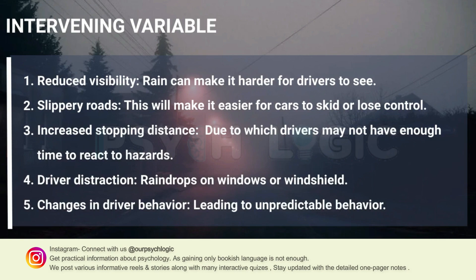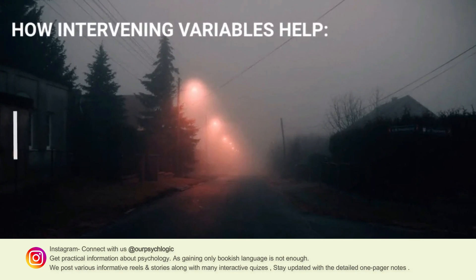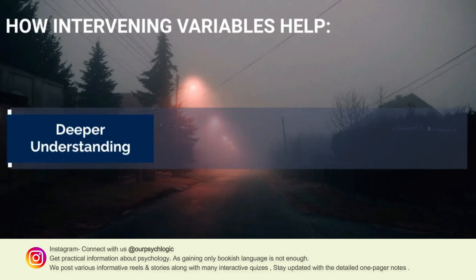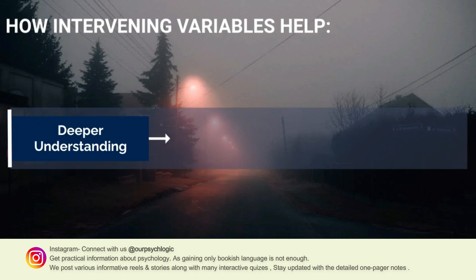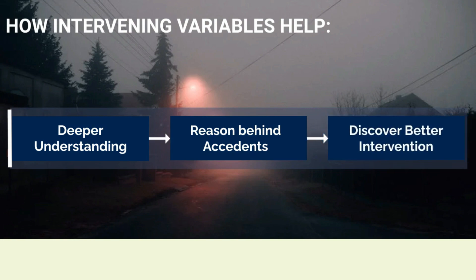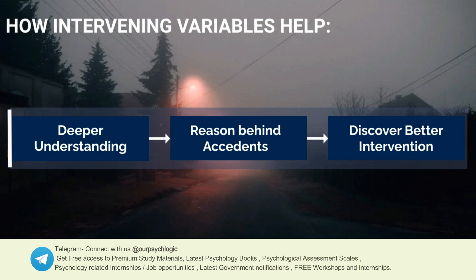Raindrops on windshields and wipers can also distract the driver, making them less attentive to the road. Additionally, there are changes in driver behavior — some drivers might drive more cautiously in the rain while others might take more risks, leading to unpredictable behavior. By identifying these intervening variables, researchers can have a better understanding of the mechanisms behind the relationship between rain and accidents, finding more factors contributing to accidents in the rainy season.